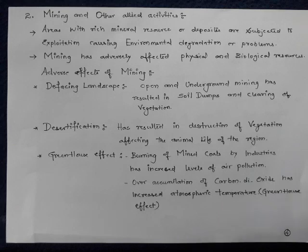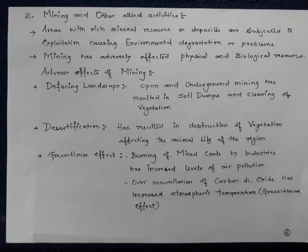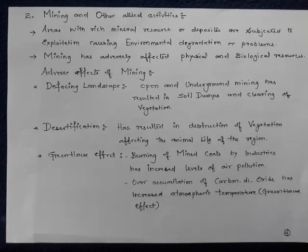Greenhouse effect: burning of coal and petroleum products emits effluents that result in global warming. Increased deposition of carbon dioxide and reduction of oxygen can cause the greenhouse effect. This is because of the over-accumulation of carbon dioxide in the atmosphere, which results in increasing temperature and influences incoming solar radiation.